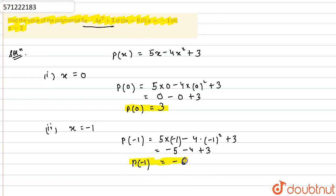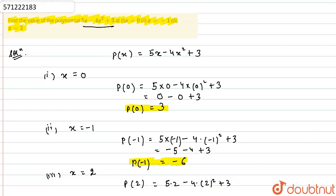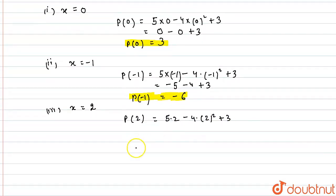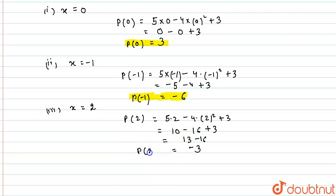So the value of the given polynomial at x equals minus one is minus six. In the third part, we find p(2): five into two minus four into two squared plus three, which gives ten minus sixteen plus three, so we get the answer as minus three.